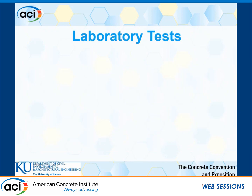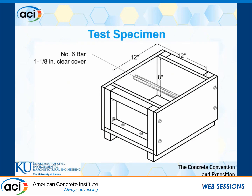After seeing these patterns repeatedly in the field, we naturally came to the question: what can we do to reduce settlement cracking? To do that, we first needed a test method that allows us to quantitatively analyze the settlement cracking behavior of different mixes. After years of trial and error, we came up with this specimen: a one-foot by one-foot cross section, eight inches deep — very typical for bridge decks. We mount a number six bar on the side of the mold, which is a very typical top reinforcement in bridge decks, with a one-eighth inch clear cover. We used a very thin cover to consistently produce settlement cracking with regular concrete.